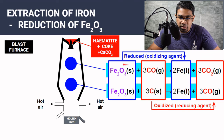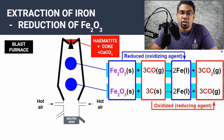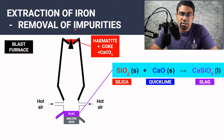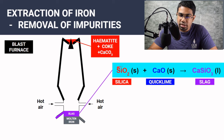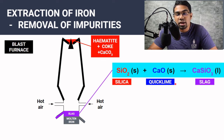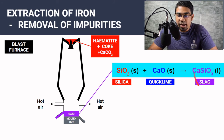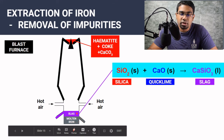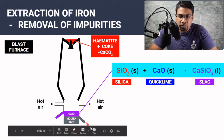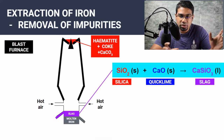So we started with iron(III) oxide and it has been reduced to iron, which is what we want — we have extracted iron from iron(III) oxide. As for the impurities, mostly sand (silicon dioxide or silica), the quicklime formed earlier reacts with silica to form calcium silicate, known as slag. Slag is less dense than molten iron, so it floats above the molten iron and is drained off separately. The molten iron is what we want, and the slag impurity is drained away above it.